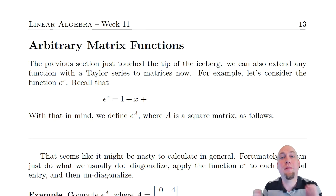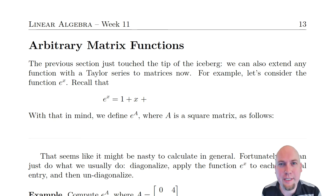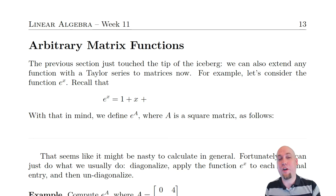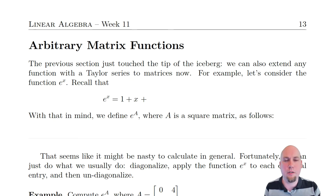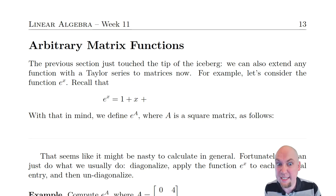Hey folks, my name is Nathan Johnson. Welcome to lecture 44 and the final lecture of Introductory Linear Algebra. In today's class we're going to take diagonalization one step farther than we have in the past and start computing even weirder functions of matrices — things like e to the power of a matrix, or sine of a matrix, or logarithm of a matrix. The way you do this is just the same way that you did arbitrary powers of a matrix: use diagonalization.